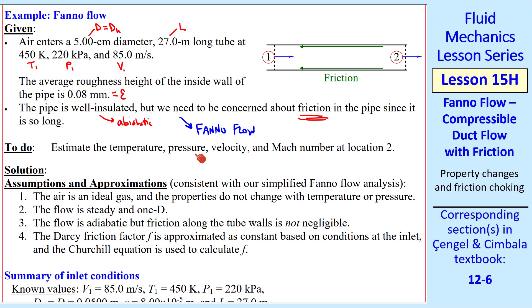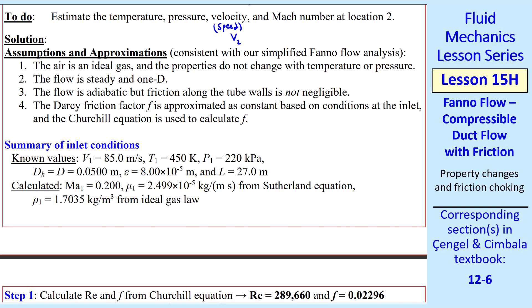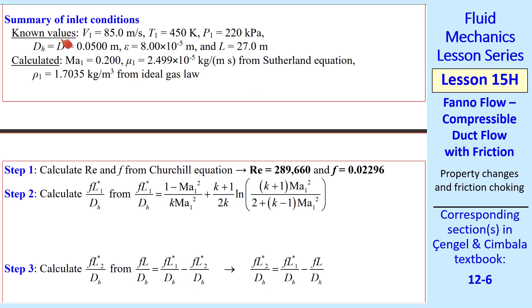We're asked to estimate the temperature, pressure, velocity, and Mach number at location 2. Velocity, of course, is in the x direction, so we really are after the speed V2. To solve this problem, we repeat the approximations and assumptions that we made previously, and then I summarize the inlet conditions. The known values are the speed, temperature, and pressure at location 1, along with the hydraulic diameter, roughness, and the length. Calculated values at the inlet are Mach number 1, the viscosity using the Sutherland equation, and the density at 1 from the ideal gas law.